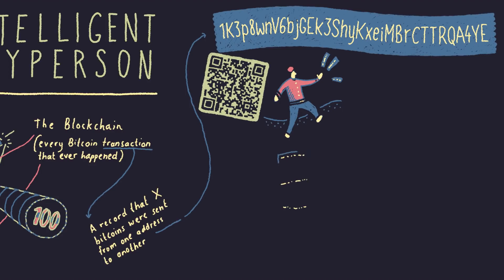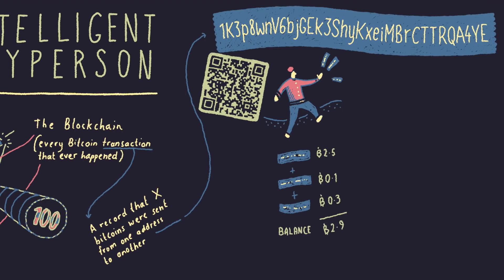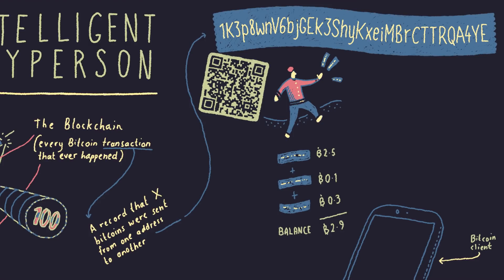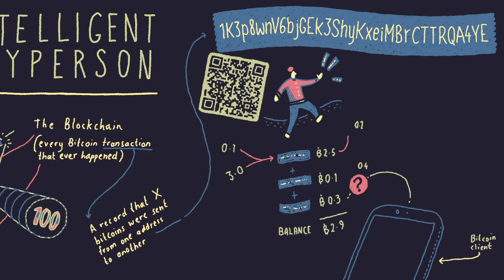Your bitcoin balance is the combined total of all the bitcoins assigned to addresses under your control. Bitcoin clients inspect the blockchain and calculate your current balance by checking the flow of funds into and out of your addresses.